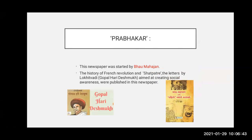The next newspaper is Prabhakar, started by Bhau Mahajan. What was in this newspaper? The history of the French revolution and Shat Patre — letters by Lokhitwadi Gopal Hari Deshmukh — aimed at creating social awareness were published in this newspaper. The aim of this newspaper was to create social awareness. The history of the French revolution was published to create awareness among Indian people.